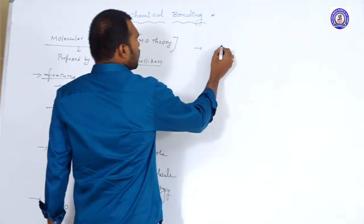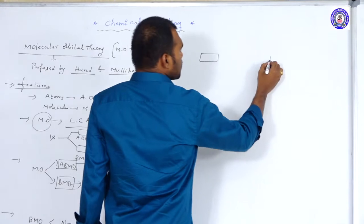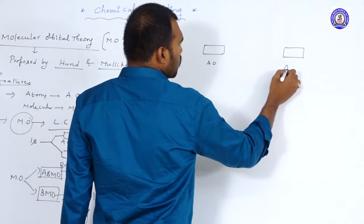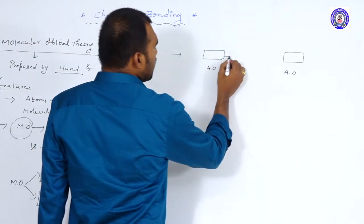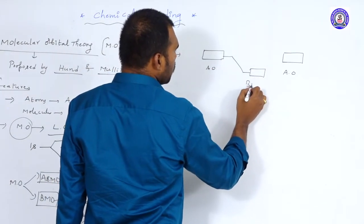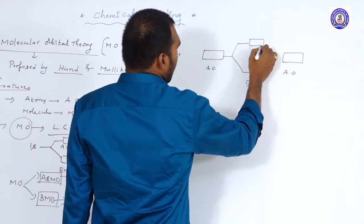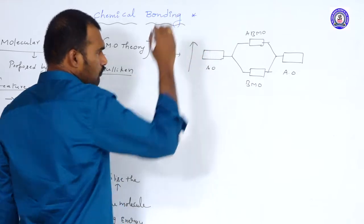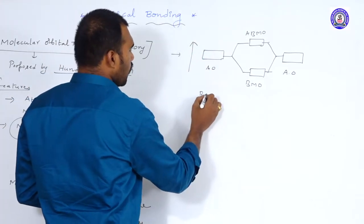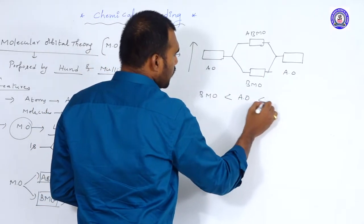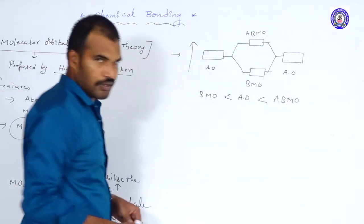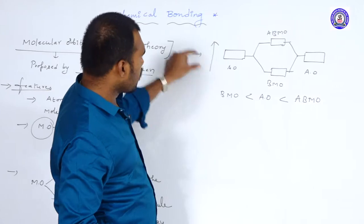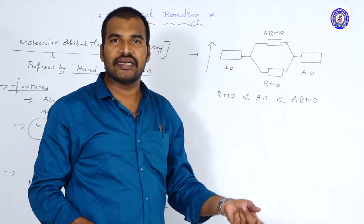To remember this simply: consider two atomic orbitals — one from each atom. Atomic orbitals are also called non-bonding molecular orbitals. When these two combine linearly, they produce one bonding molecular orbital and one anti-bonding molecular orbital. Electrons entering bonding molecular orbitals stabilize by decreasing energy, while electrons entering anti-bonding orbitals destabilize by increasing energy.